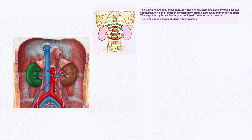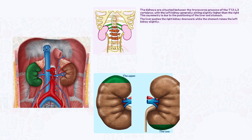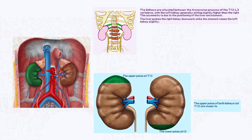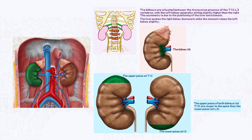The liver pushes the right kidney downward while the stomach raises the left kidney slightly. The upper poles of both kidneys at T12 are closer to the spine than the lower poles at L3. The kidney hilum typically aligns with the L2 vertebra, so the ureter can be seen running downwards from the L2 level along the sides of the spine.